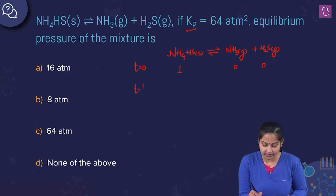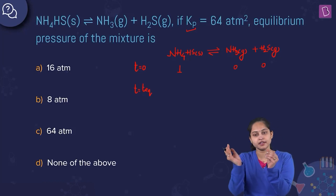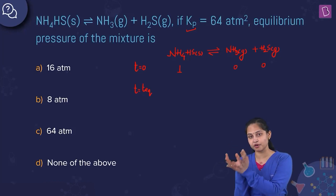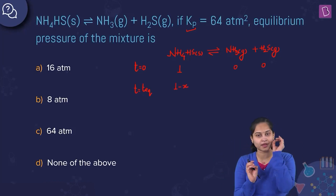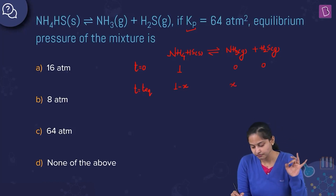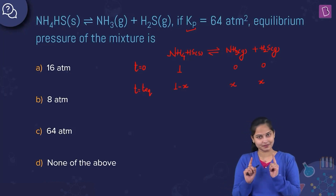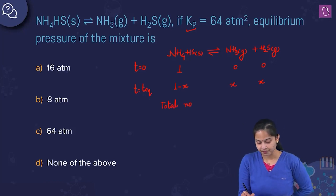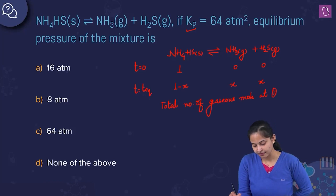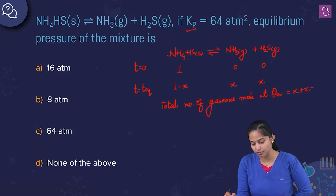At equilibrium, let X moles of NH4HS have dissociated, leaving (1−X) moles of NH4HS, and forming X moles of NH3 and X moles of H2S. Total number of gaseous moles at equilibrium equals X plus X, which is 2X.